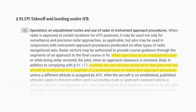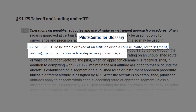Surprisingly, the FAA gives no explicit definition of the term "established" in either the FAR or the AIM. The Pilot Controller Glossary says that established means to be stable or fixed at an altitude or on a course route, etc. Using the word stable to define the word established, which both have the same root, is a bit of a circular definition.